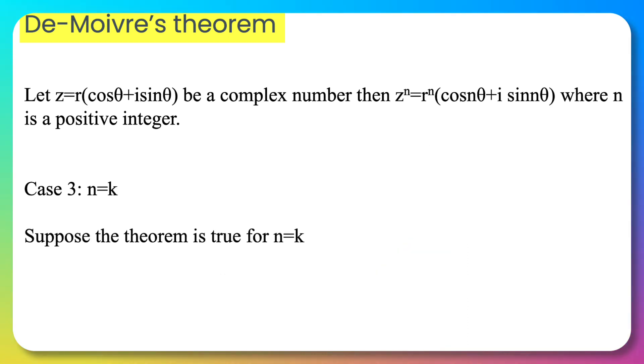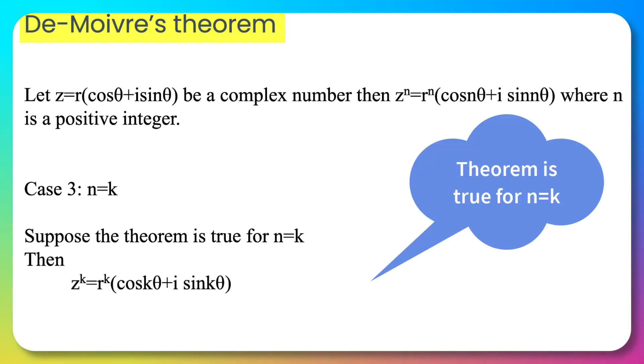Now we start case 3, the hypothesis step, in which we suppose that this theorem is true for n = k. That means z^k = r^k(cos kθ + i sin kθ).